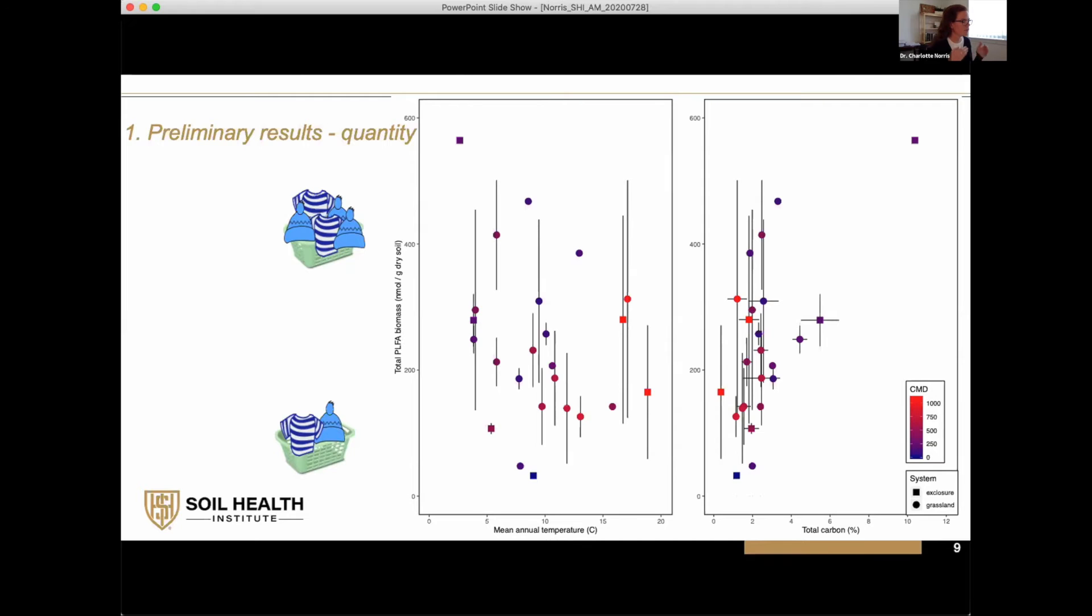It's another thing to keep in mind when you're looking at your data and comparing across reports—think about the units being used in this lack of standardization. That's about the quantity and range. We've got about 50 to about 600 nanomoles per gram in these unmanaged systems with continual perennial cover.